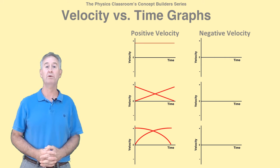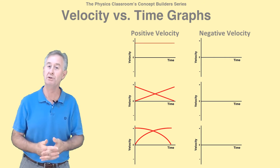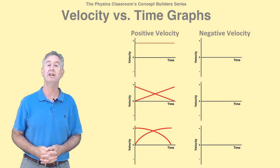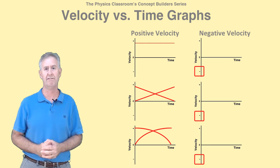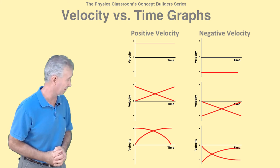And similar reasoning would lead to the conclusion that an object moving in the negative direction is represented by a line in the negative region of the graph, like those lines there.